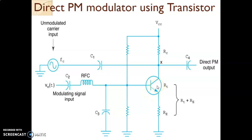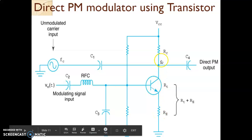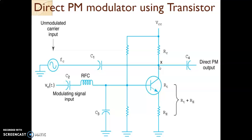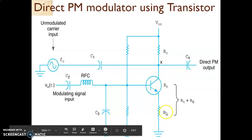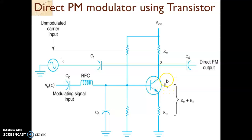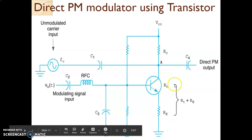When the transistor is conducting, it will act as a short circuit. Though we say at the short circuit resistance will be zero, there will be some internal resistance present, which we name RT. The emitter resistance RE will also be there, and when the transistor is conducting, point X is connected to ground. The transistor has some internal resistance RT, and the emitter resistor is RE. The sum of this resistance is RT plus RE.